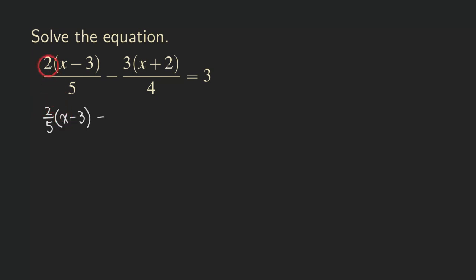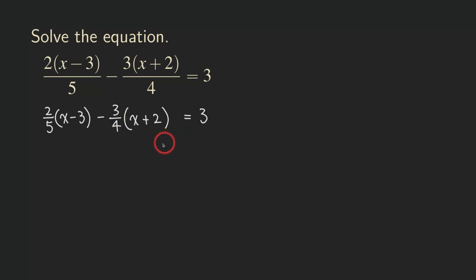Now you see that we have the 2 and the 5 in the front. We can do the same thing for the second term — we can put the 3 and the 4 in the front. So we are going to get minus 3 over 4, and then times x plus 2, and all that is equal to 3. That's the new-looking equation, which is the same as the original problem.